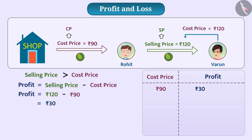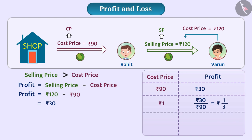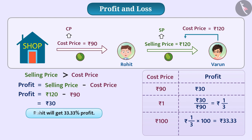That is, there will be a profit of Rs 30 divided by 90 on the cost price of Rs 1, which is equal to Rs 1/3. Similarly, for a cost price of Rs 100, Rohit will get a profit of Rs 1/3 multiplied by Rs 100, equal to Rs 33.33. The profit earned for every Rs 100 spent on the cost price is called profit percentage. That is, Rohit will get 33.33% profit in this transaction.